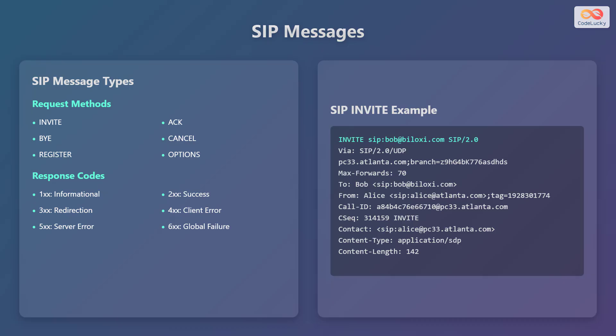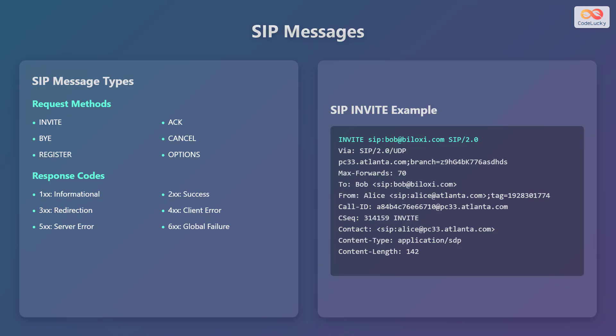Response codes are sent from a server to a client to indicate the outcome of a request, similar to HTTP response codes. Codes in the 100 series are informational, such as 180 Ringing. Codes in the 200 series indicate success, such as 200 OK. Codes in the 300 series indicate redirection, such as 300 Multiple Choices. Codes in the 400 series indicate client errors, such as 403 Forbidden. Codes in the 500 series indicate server errors, such as 500 Internal Server Error. Codes in the 600 series indicate global failures, such as 603 Decline.